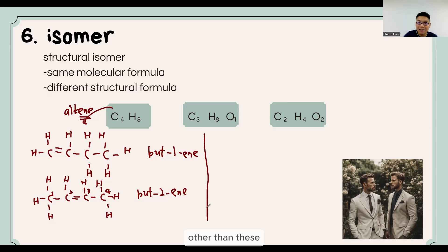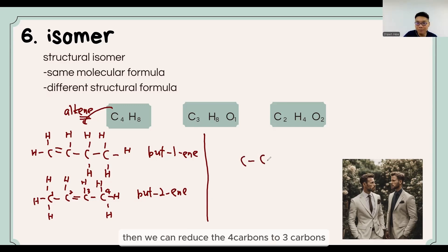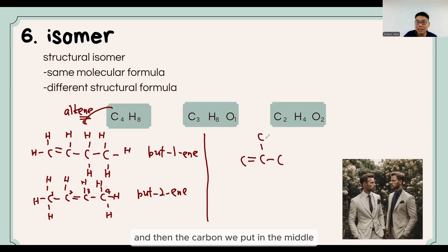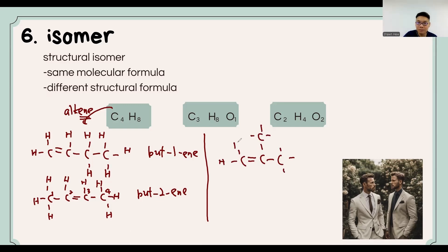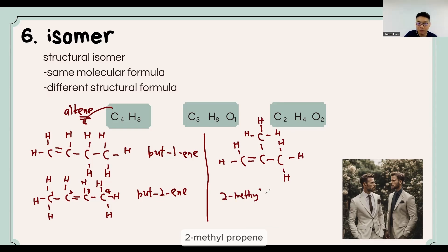Other than these, we can reduce the 4-carbon chain to 3 carbons, fit in the double bond, and put the extra carbon in the middle. This is also C4H8 — it is 2-methylpropene.